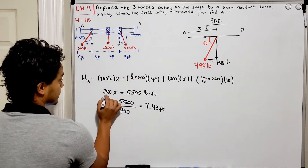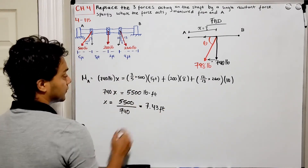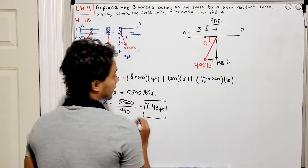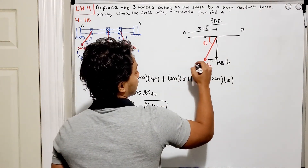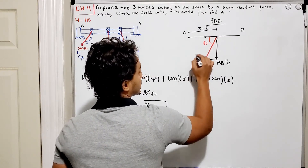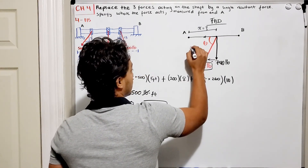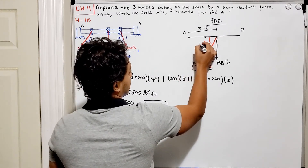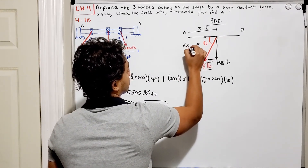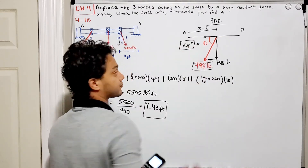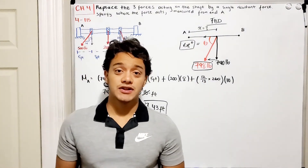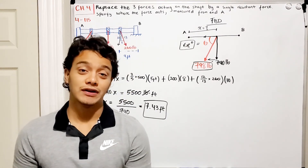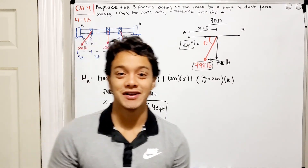The pounds cancel, leaving us with the distance in feet. We've found our distance of 7.43 feet, the magnitude of 798.5 pounds, and the angle theta of 68 degrees. Thanks for watching — if you have any questions or comments, put them below and I'll see you in the next video.